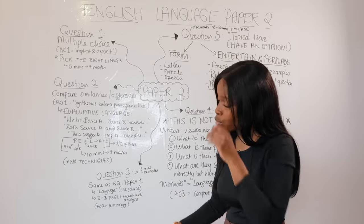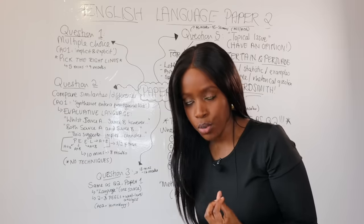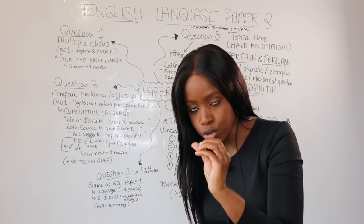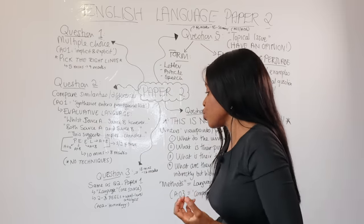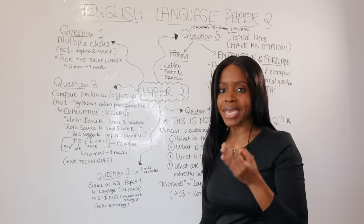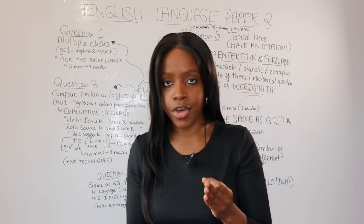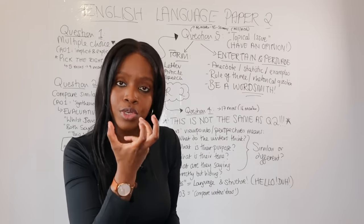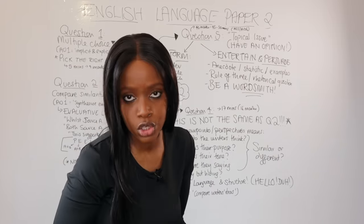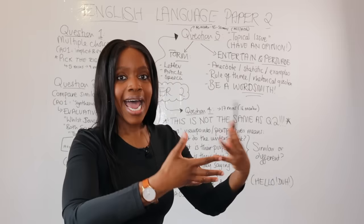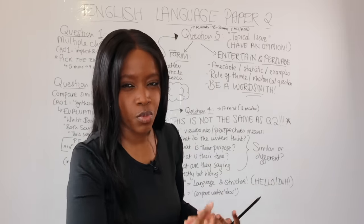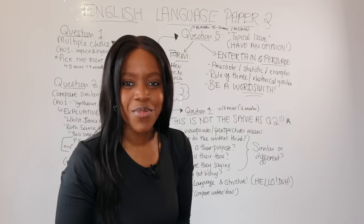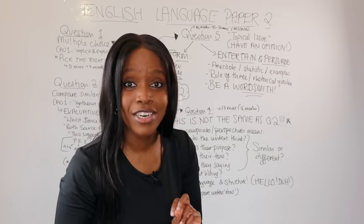Not only do you need to talk about language, but within your PEEL paragraphs aim to write at least two, minimum, if not three. Also try to zoom in on one word and do some word-level analysis — make it relevant to the question. That's question three for language paper two — it should feel like home because you're not comparing two sources; you're just looking at one source and talking about language techniques and doing word-level analysis.